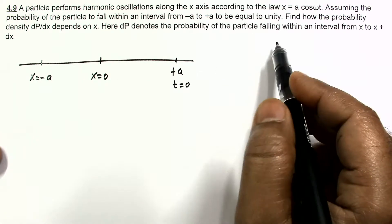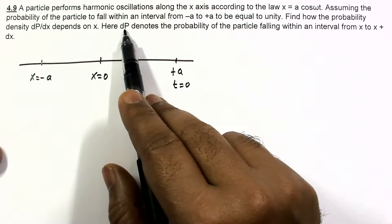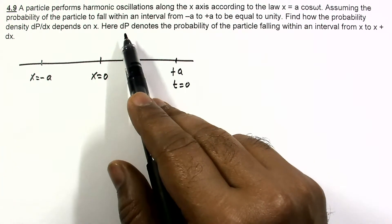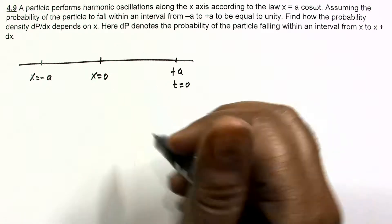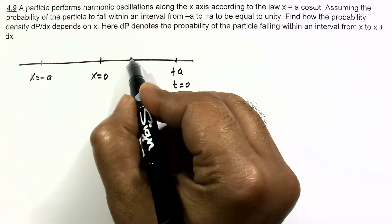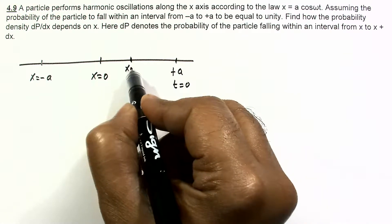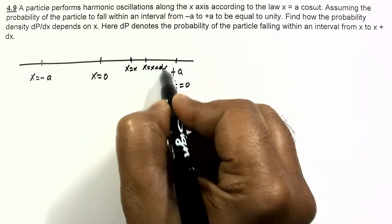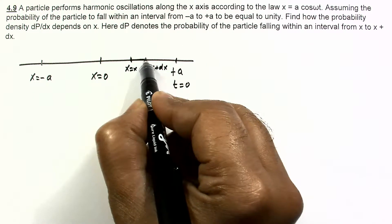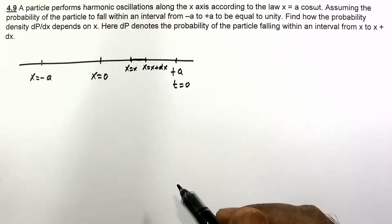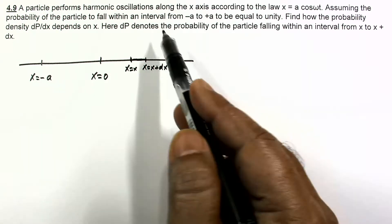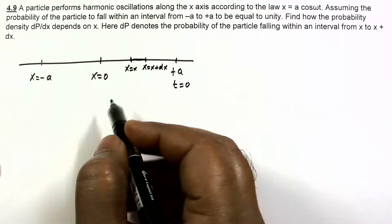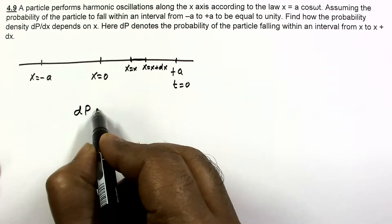We are required to find the probability dp — that is, what is the probability that we can find the particle between x and x plus dx. So what is the probability of finding the particle in this region from x to x plus dx? That is dp, and for finding dp we can write the expression as dp is equal to...